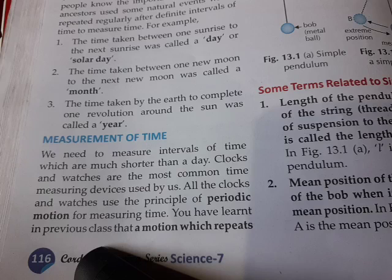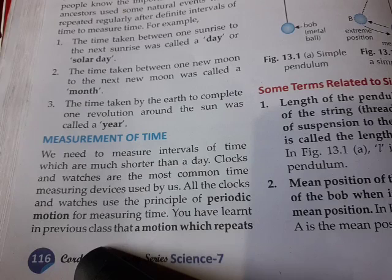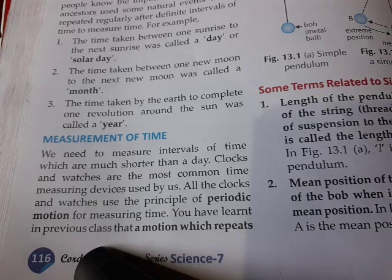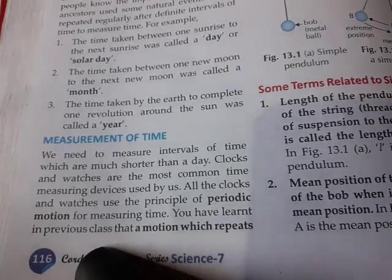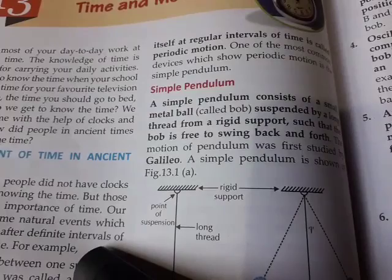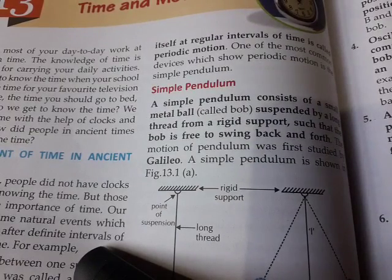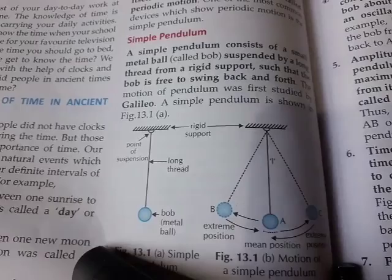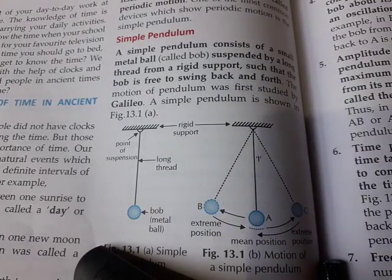So inside watches, periodic motion works like this — the needle, minute hand, second hand, and hour hand all remain fixed at the center and rotate in circles continuously. They cover periodic positions, completing one circle and then following the same path again. That is why we call this periodic motion. A motion which repeats itself at regular intervals of time is called periodic motion. The most common device to measure periodic motion is the simple pendulum.